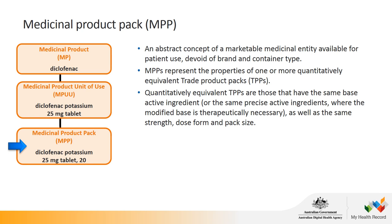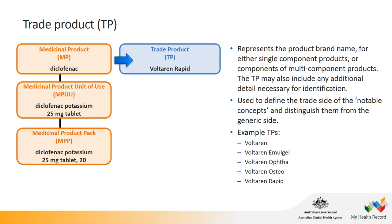Moving on to the medicinal product pack. The medicinal product pack is an abstract concept of a marketable medicinal entity available for patient use, but devoid of brand and container type. It represents the properties of one or more quantitatively equivalent trade product packs — those with the same active ingredient, same strength, dose form and pack size. The trade product represents the product brand name, either for a single component product or components of a multi-component product, and is used to define the trade side of the notable concepts and distinguish them from their generic counterparts.